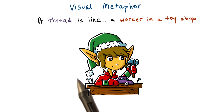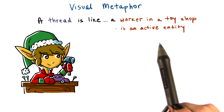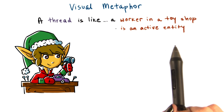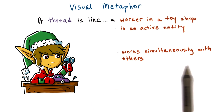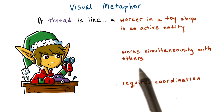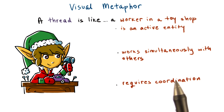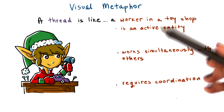But what qualities make a worker in a toy shop similar to a thread? The first quality is that a worker in a toy shop is an active entity. Secondly, a worker in a toy shop works simultaneously with others. And finally, a worker in a toy shop requires coordination, especially when multiple workers are working at the same time and perhaps even contributing to the same toy order. Let's elaborate on these points now.